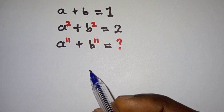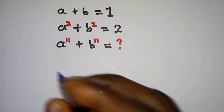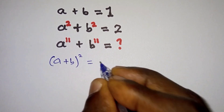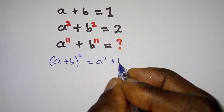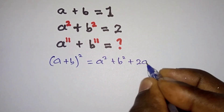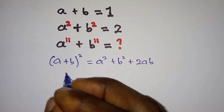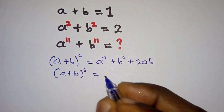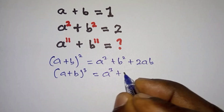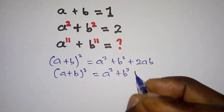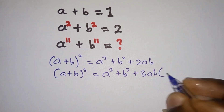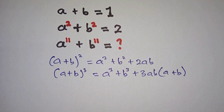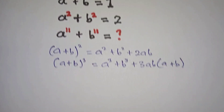We are going to be using two important identities to solve this problem. The first one is: (a plus b) squared is equal to a squared plus b squared plus 2ab. The second is: (a plus b) cubed is equal to a cubed plus b cubed plus 3 times ab times (a plus b). Pay attention to these two identities — we're going to be applying them to solve the problem.